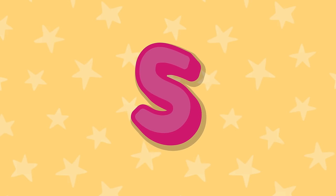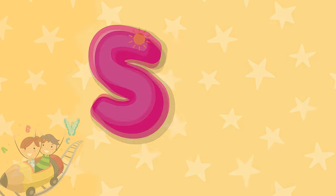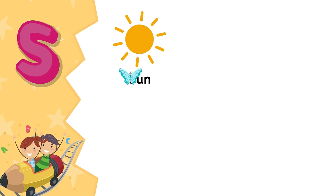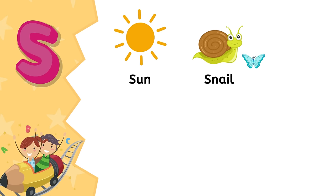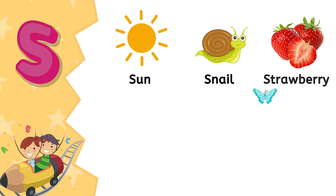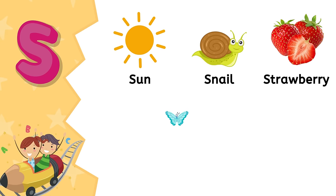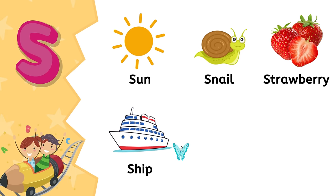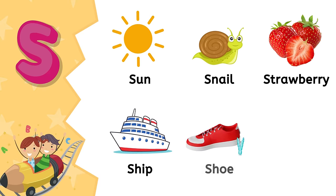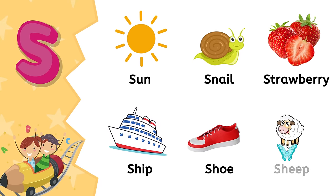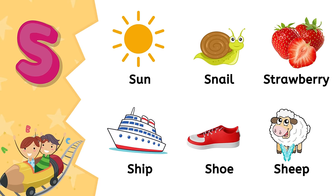S. S is for sun. S is for snail. S is for strawberry. S is for ship. S is for shoe. S is for sheep.